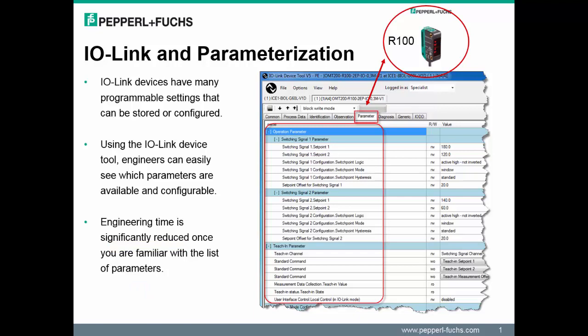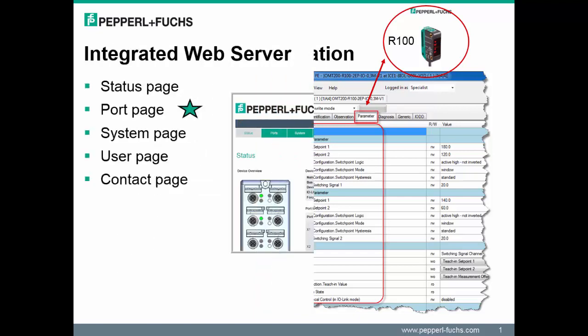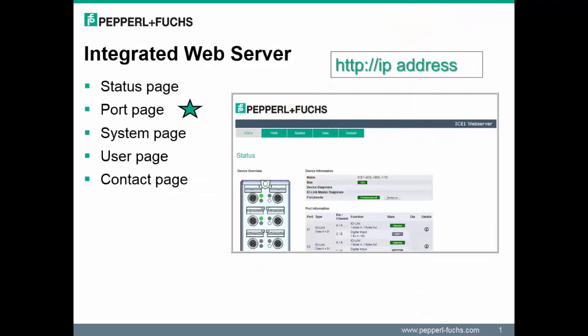This particular slide shows some of the parameters displayed for the Pepperl+Fuchs R100 sensor connected to port 1. The Ethernet IO-Link Master in this launch also has an integrated web server. One key change to the integrated web server is the introduction of a new port page.